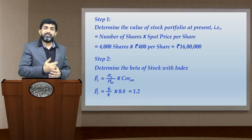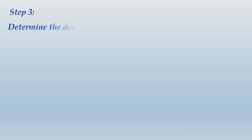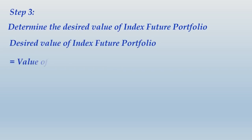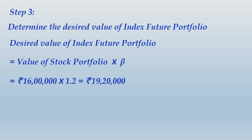Step 3: Determine the desired value of the index future portfolio. This equals the value of the stock portfolio multiplied by beta: Rs. 16 lakhs × 1.2 = Rs. 19,20,000. You must enter into a Nifty futures contract with a short position and target a contract value of Rs. 19,20,000.